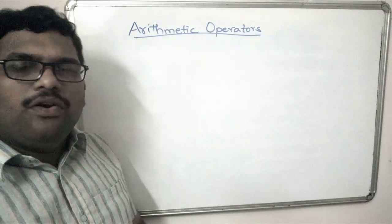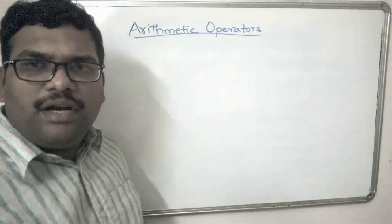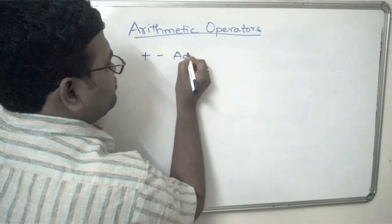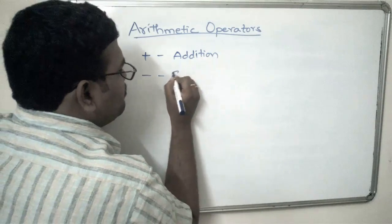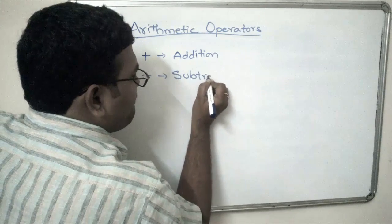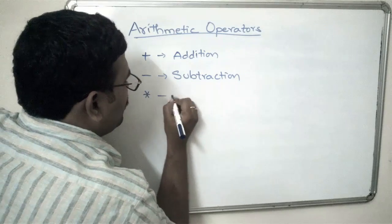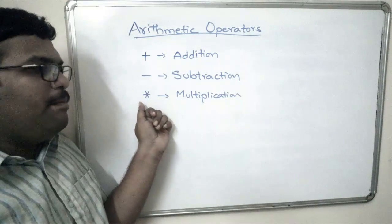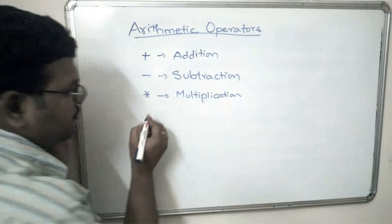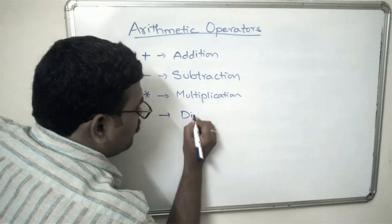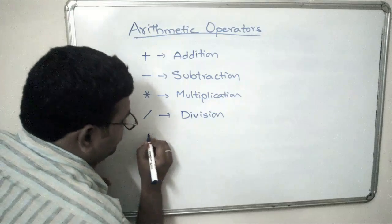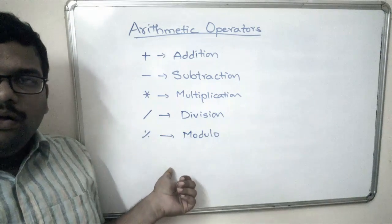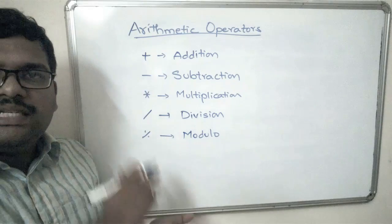Arithmetic operators — as we all know, we see these in our regular calculator as well. There are five main arithmetic operators: addition, subtraction, multiplication — which in C is denoted by the star symbol — division, and one more operator called the modulo operator. All five of these are treated as arithmetic operators.